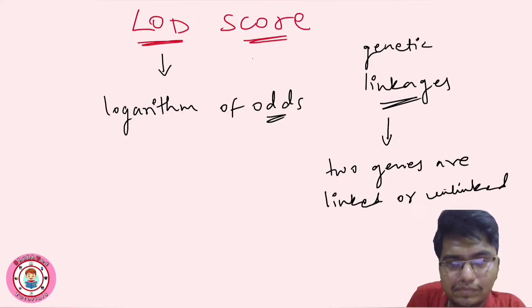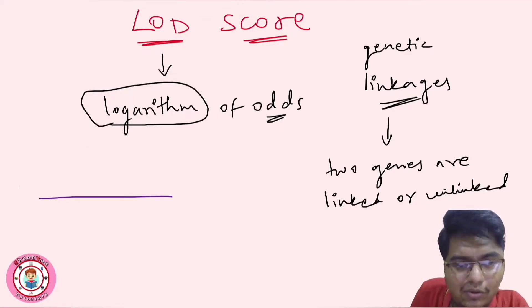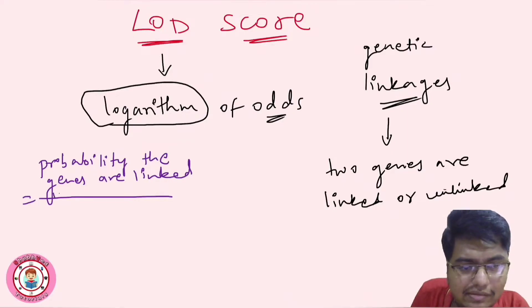All right, so how is this calculated? First of all, we can understand from the name it is related to logarithm, log, right? This is the calculation between two ratios. The ratio is probability that genes are linked with certain amount of recombination.